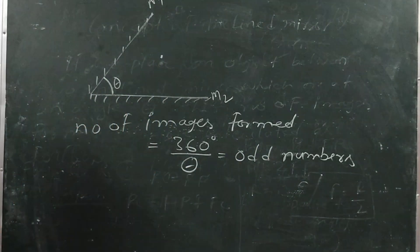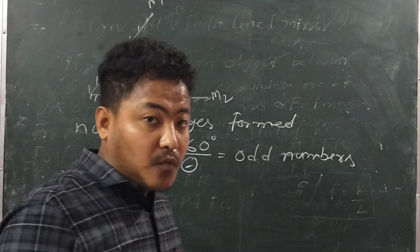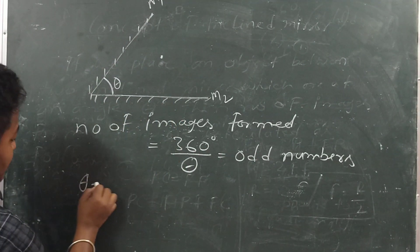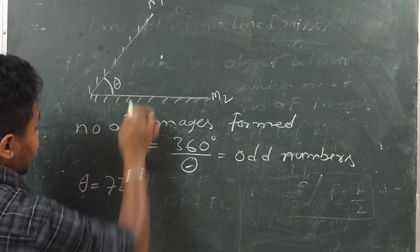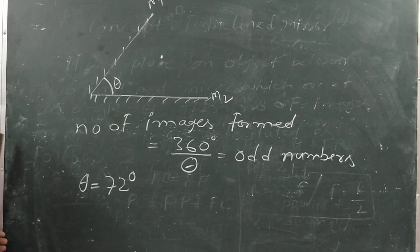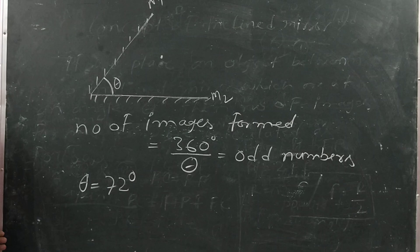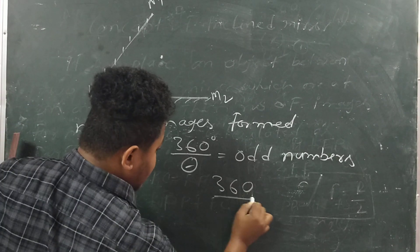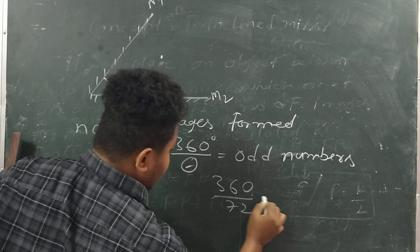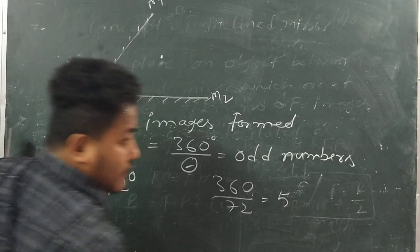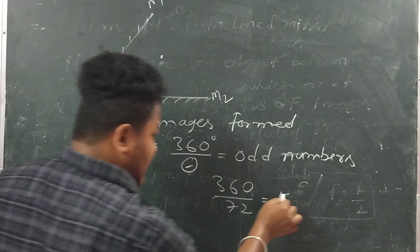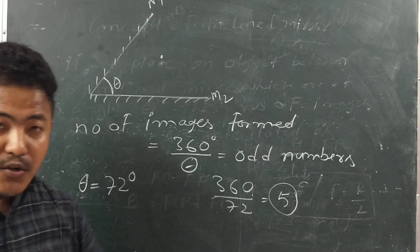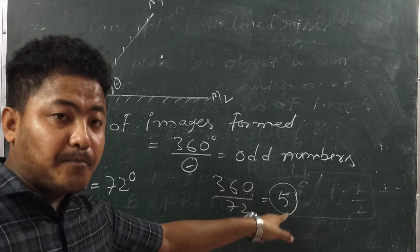For example, suppose theta is 72 degrees. Then the number of images formed is 360 divided by 72, which equals 5. Since 5 is an odd number, the total number of images formed is 5.